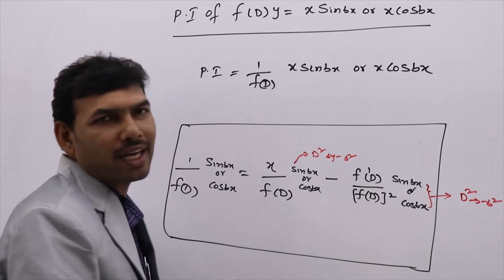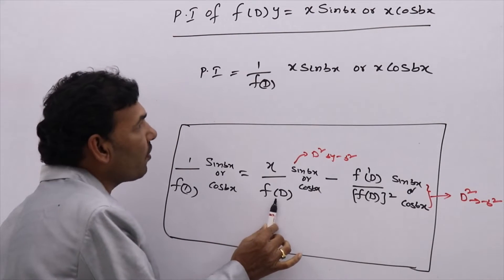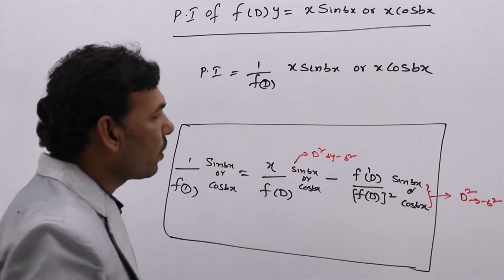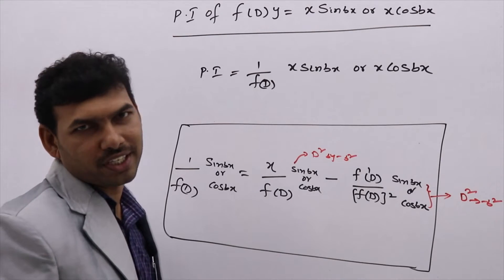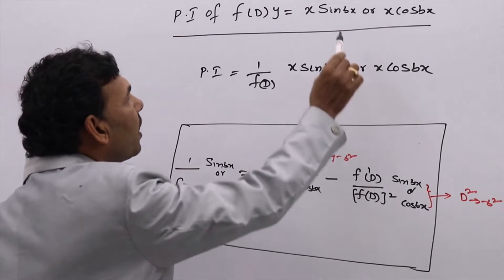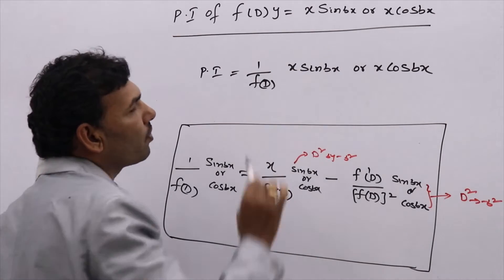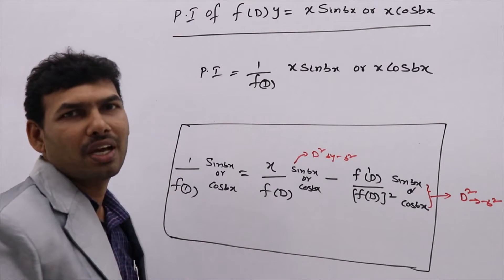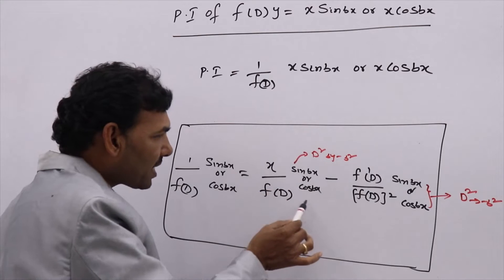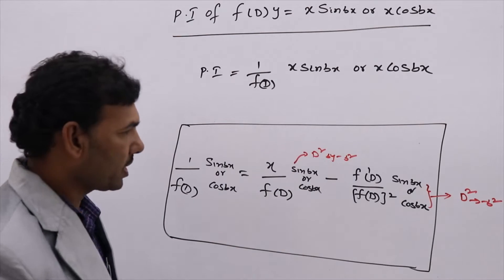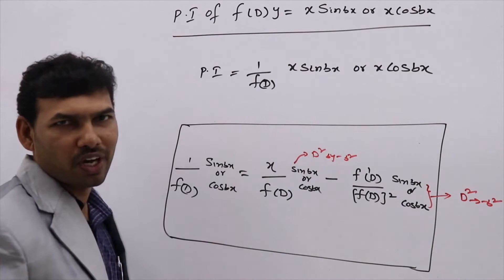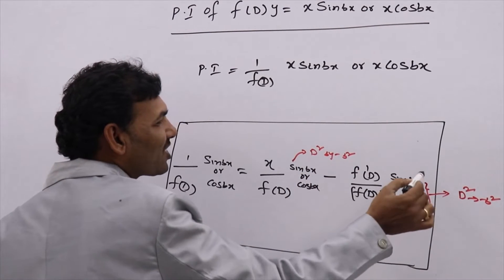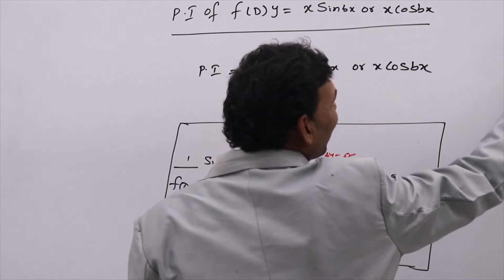After writing this formula, apply the sin-cos rule. What the sin-cos rule says: replace D² by minus b². So wherever you have sin or cos, replace D² by minus b². If you have sin(x), replace D² by minus 1. If you have sin(3x), replace D² by minus 9. After doing this replacement, you will simplify and get the result.